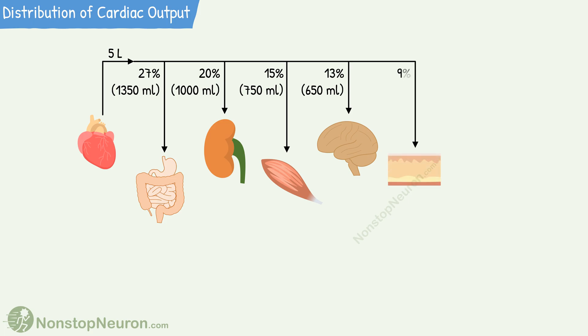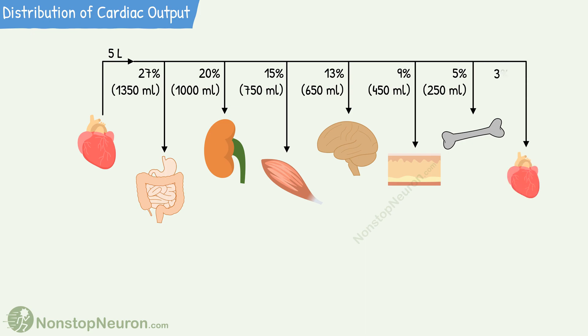9%, or 450 milliliters, goes to the skin. 5%, or 250 milliliters, goes to bone. 3%, or 150 milliliters, goes to the heart itself. And the remaining 8%, or 400 milliliters of blood, is distributed in other tissues.